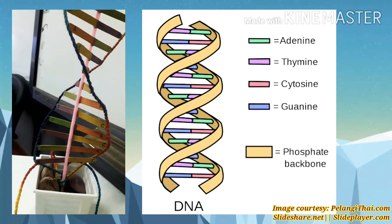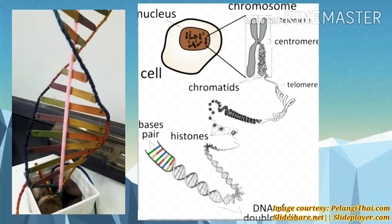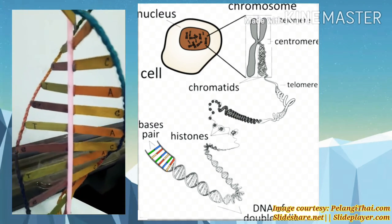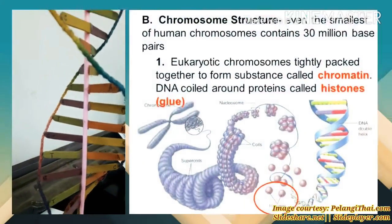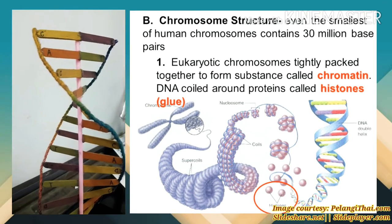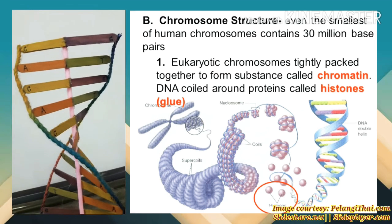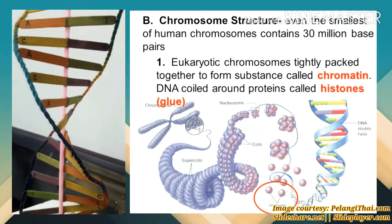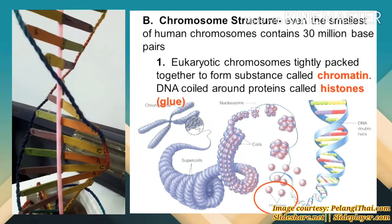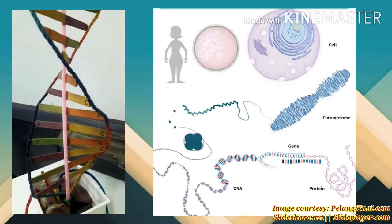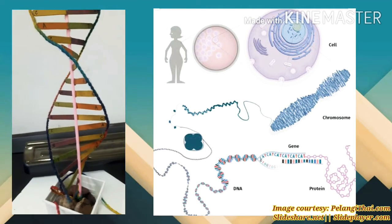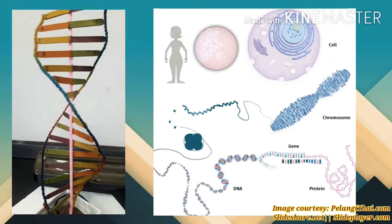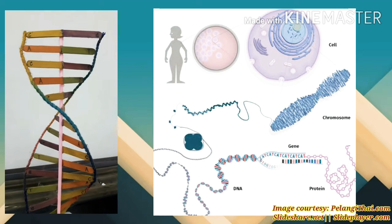The sugar-phosphate strands form the sides of the twisted ladder. There is so much DNA in each tiny cell that it must be condensed further to fit inside. DNA is tightly coiled in a structure called chromosomes. Humans typically have 46 chromosomes in each individual cell — 23 chromosomes shared from each parent, 23 from male gametes and 23 from female gametes.